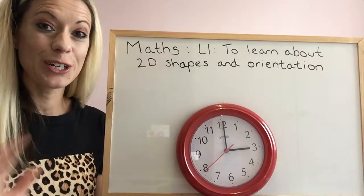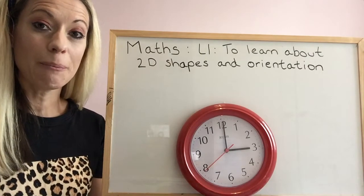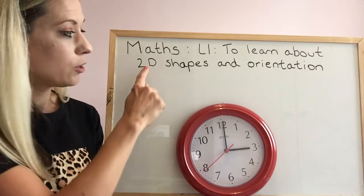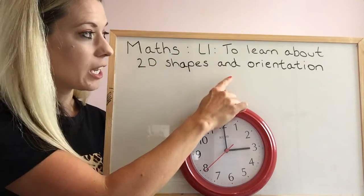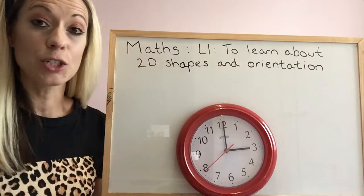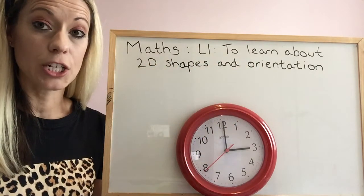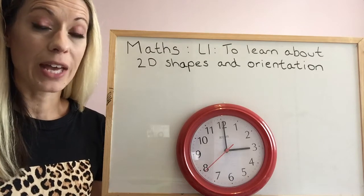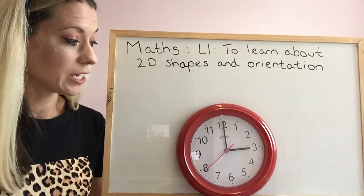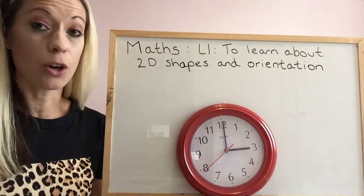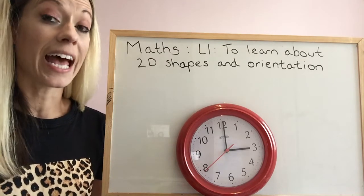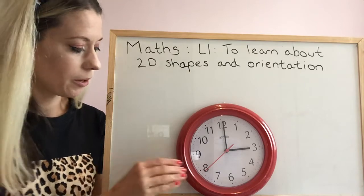Hi children, welcome back to the third video on 2D shapes and orientation. We're going to look at the idea of rotation — clockwise and anti-clockwise.